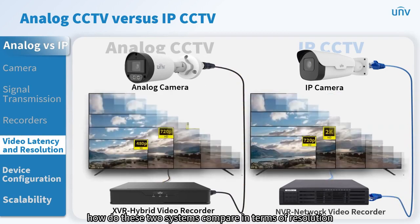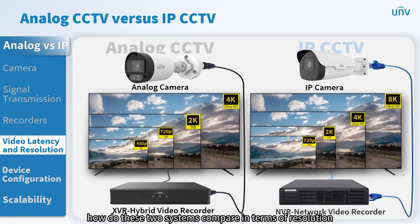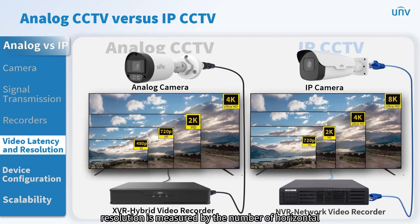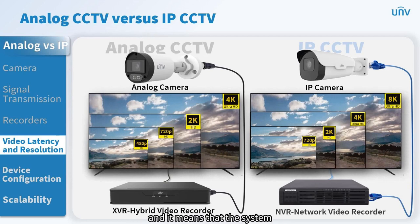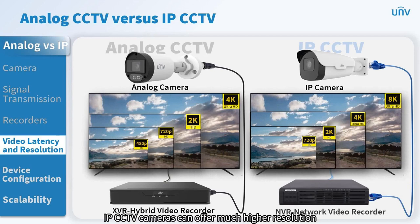In terms of resolution, analog CCTV measures resolution by the number of horizontal and vertical television lines in an image, and typically it won't be very high. This means the system can't capture or detect motion very well. IP CCTV cameras can offer much higher resolution, from 720p to 4K or even 8K.